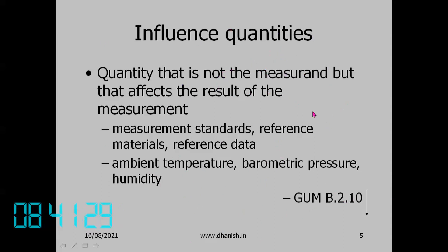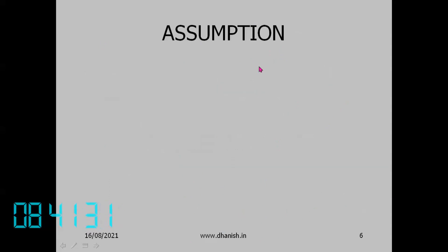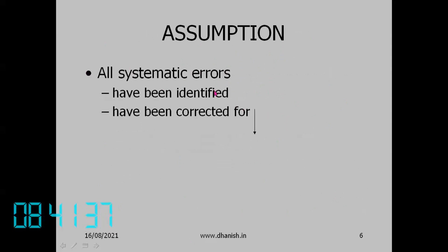Now we go to the computation of Type A. The assumption is that all systematic errors have been identified and corrected for. The compensation itself will have some uncertainty, which is treated as a Type B uncertainty. There should be no uncorrected systematic error.